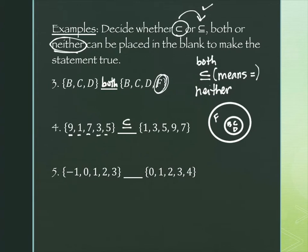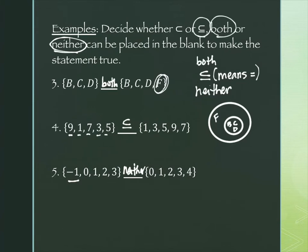For number five: going down the list, negative one fails right away. That negative one in the left-hand set is not on the right-hand side, so we don't even have to go further. The answer is 'neither.' So our three real choices are 'both,' 'subset only,' and 'neither' — even though it looked like four options.